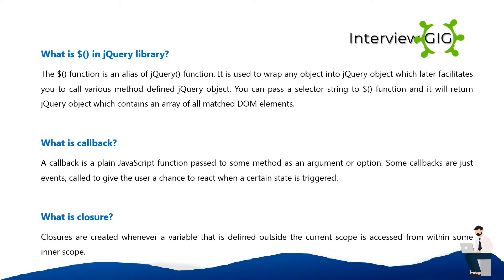What is a callback? A callback is a plain JavaScript function passed to some method as an argument or option. Some callbacks are just events called to give the user a chance to react when a certain state is triggered.